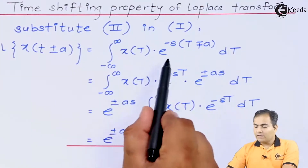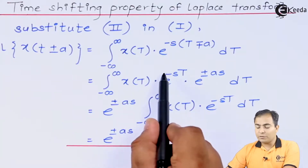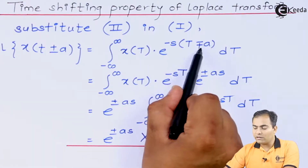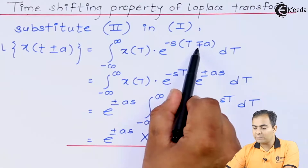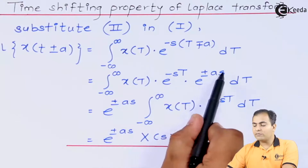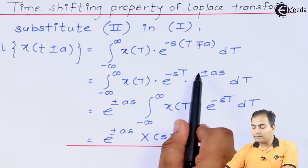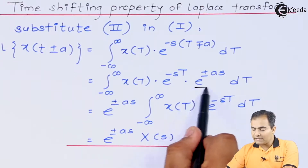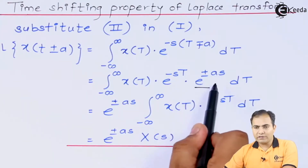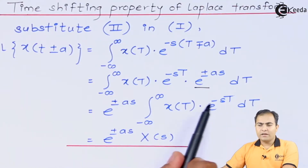Just after substituting equation two into the main equation, you get this result. Now I'm going to separate the exponential part. After separating, you get e to the power minus sT, and since the minus is moved inside, signs will be reversed for a — so minus minus becomes plus and plus becomes minus. We now have e to the power minus sT multiplied by e to the power ∓ as, with respect to dT. Since the whole integration depends on capital T, this part e to the power ∓ as is a constant — I'll take it outside.